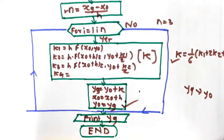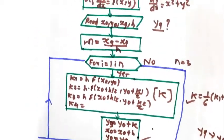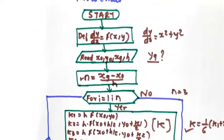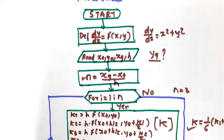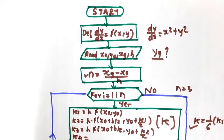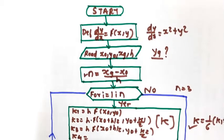This is the flowchart for the RK fourth-order method. I hope you understood this flowchart. Thank you for watching.